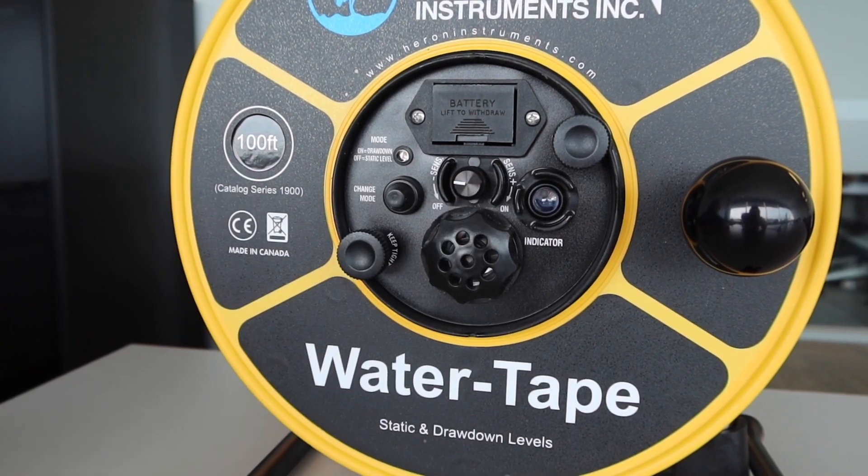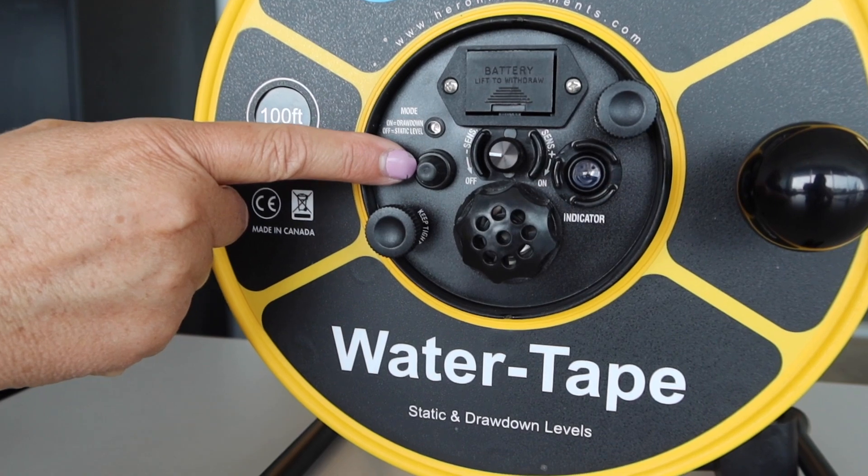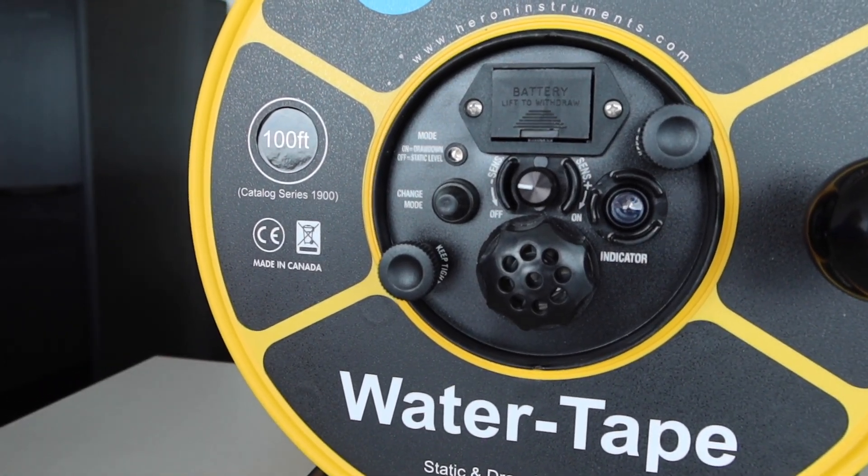There is also a mode change button to put the unit into drawdown mode. This is a great feature for pump testing.